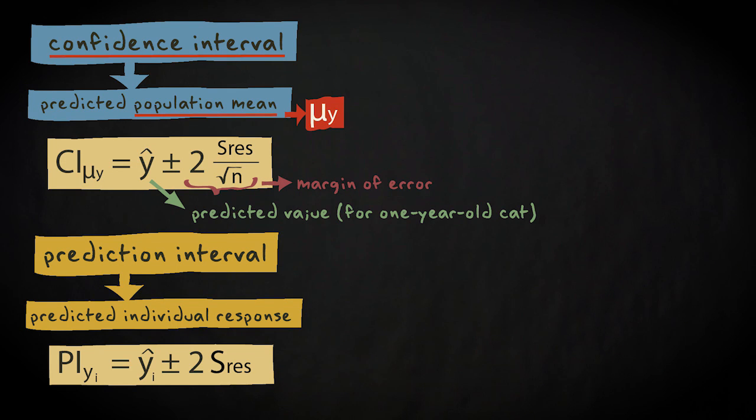As we've seen earlier, the margin of error is the t value associated with the selected confidence level and degrees of freedom times the standard error.